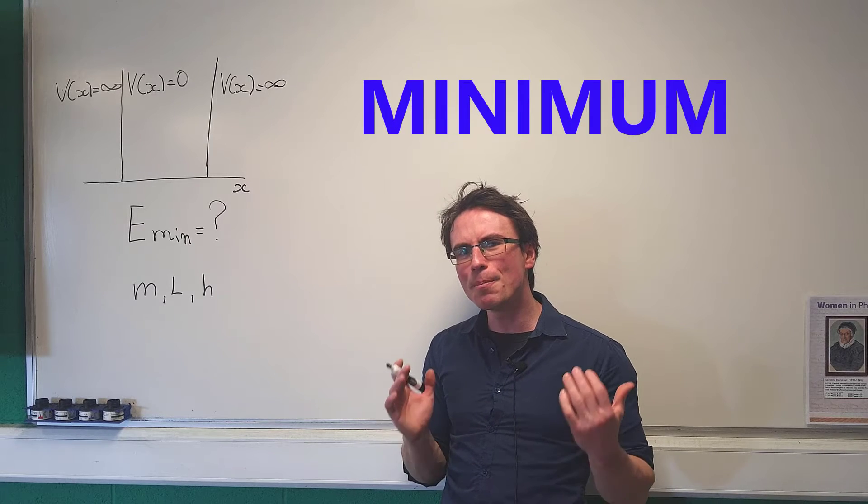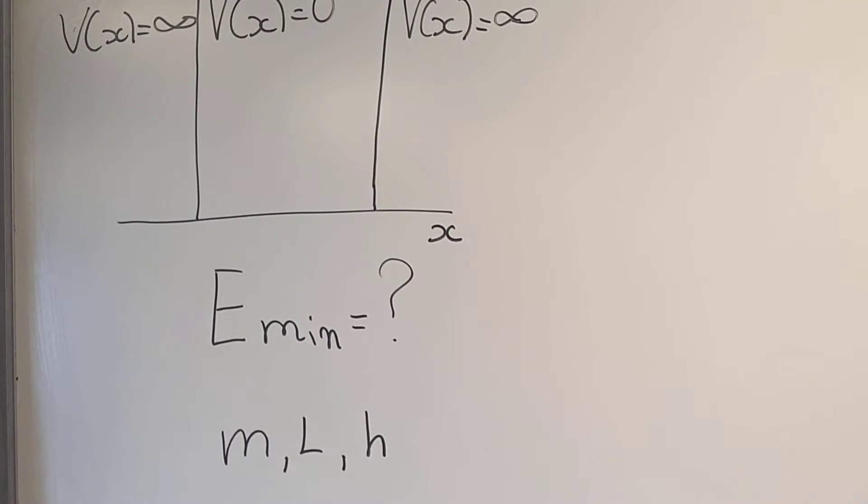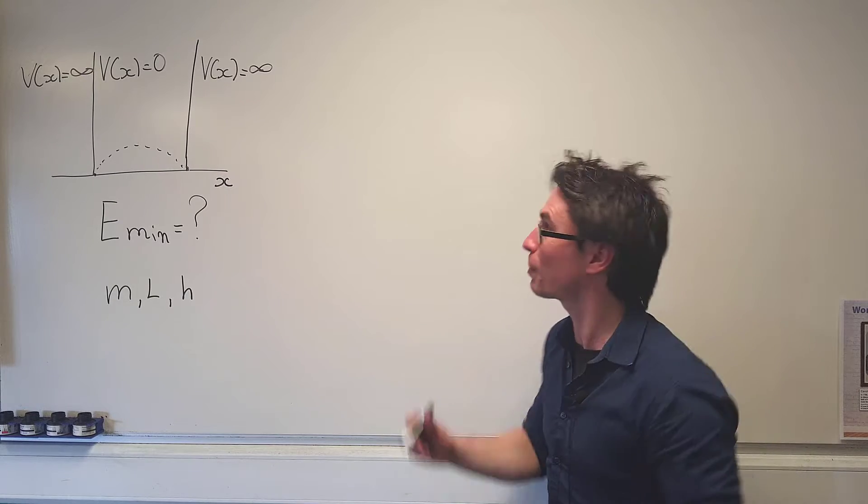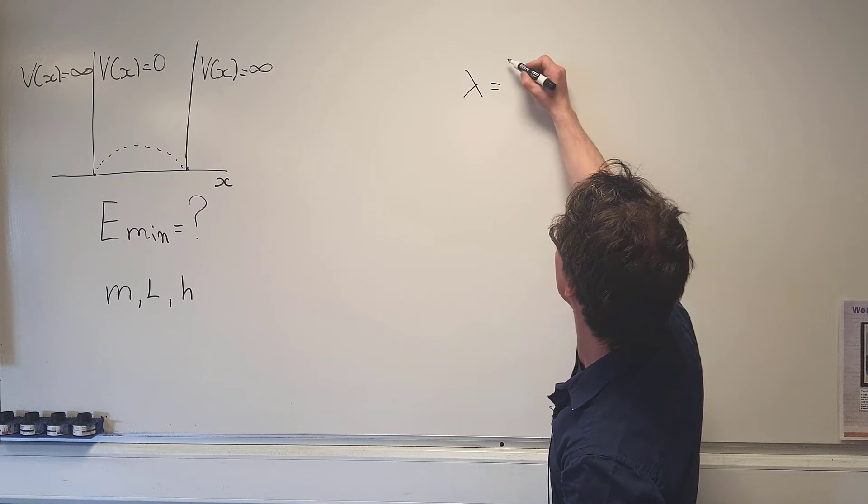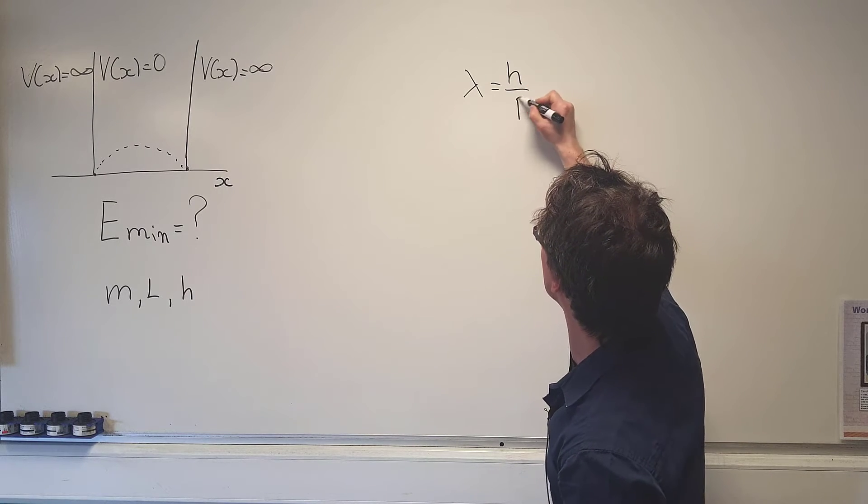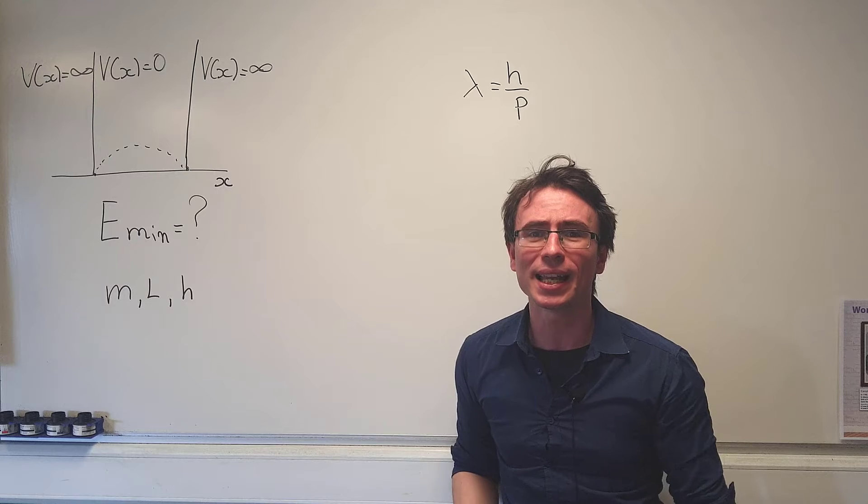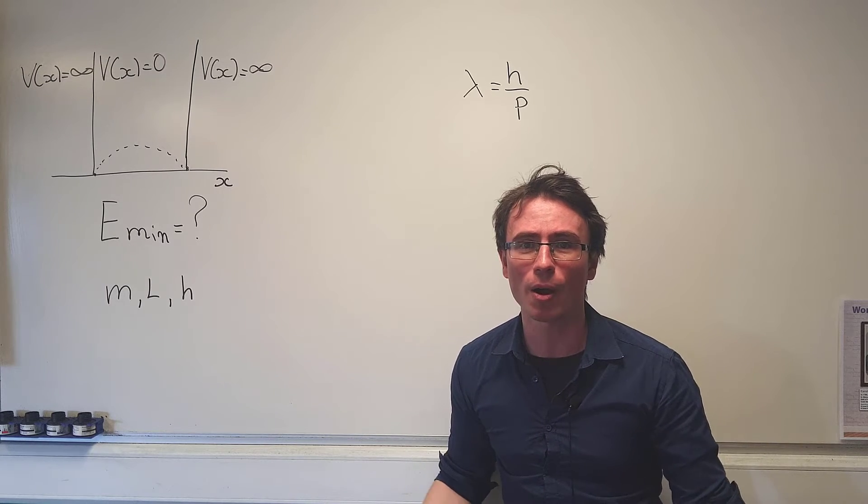What will the minimum energy of this particle actually be? The de Broglie wavelength of this particle is given by the expression that lambda, the de Broglie wavelength, is equal to h over p, where h is Planck's constant and p is the momentum of the particle.